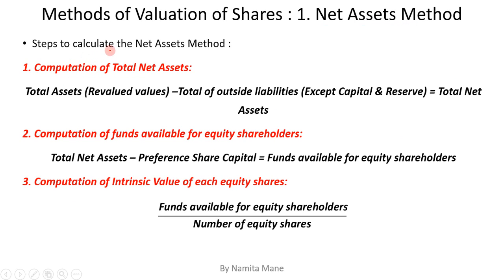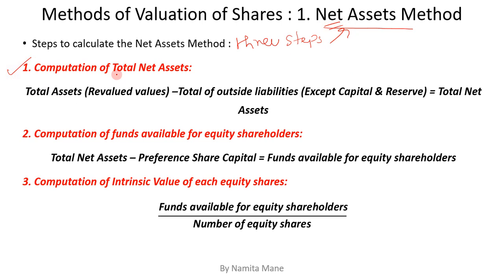There are three steps to calculate net asset method. First is computation of total net asset. Second step is computation of funds available for equity shareholders. And third is computation of intrinsic value of each equity share. These three steps you have to follow in order to get net asset method.